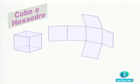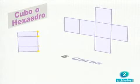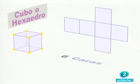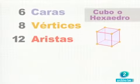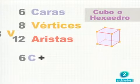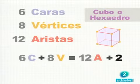El cubo tiene seis caras. Cuatro laterales, una arriba y otra abajo. Ocho vértices. Cuatro arriba y cuatro abajo. Y doce aristas. Cuatro arriba, cuatro abajo y cuatro laterales. Si sumamos el número de caras más el de vértices, seis más ocho, obtenemos catorce. Dos más que el número de aristas.